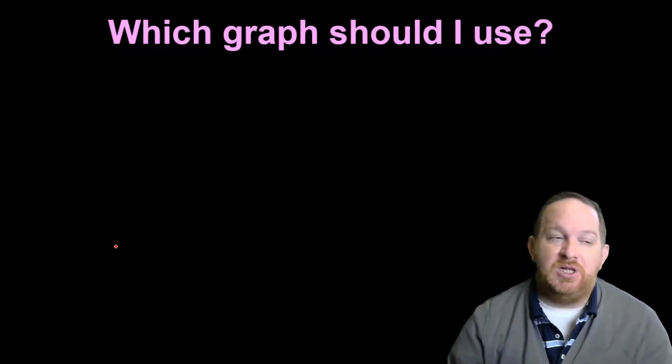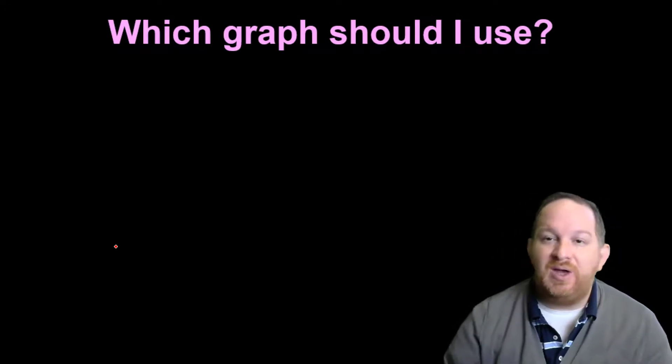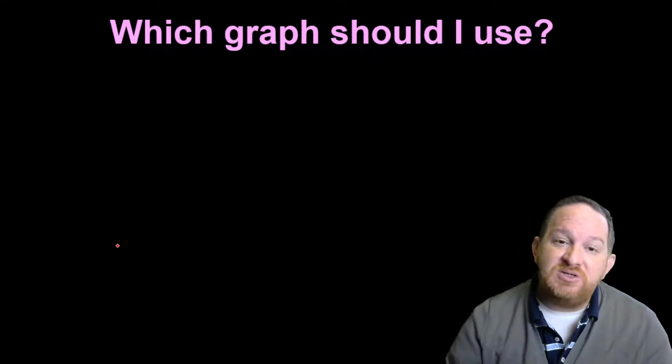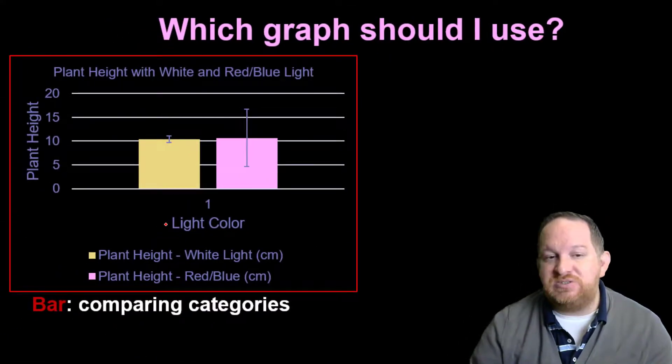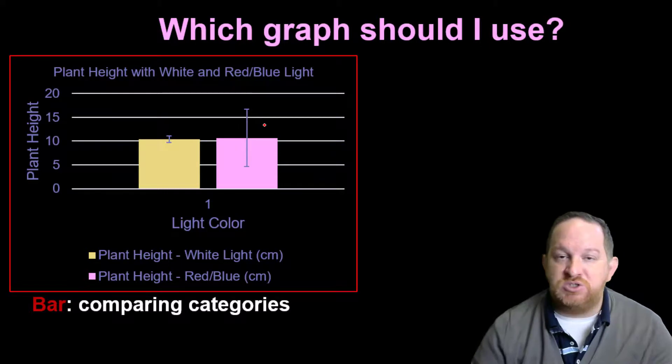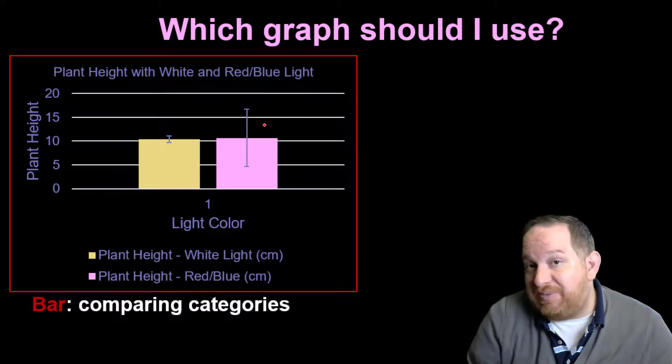So then I get this question a lot. Well, okay, I've got some data. What kind of graph should I use? Well, it depends on what kind of data you took. Notice in this example, the last example I used, I used a bar graph because I'm comparing categories. I had this category compared to this category, and I put my error bars on it. That's not always the best type of graph.